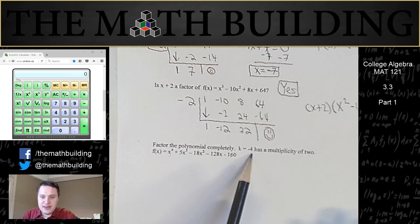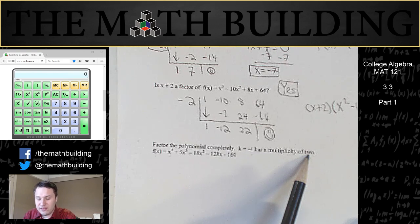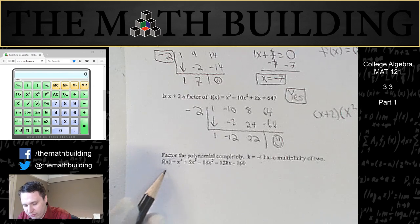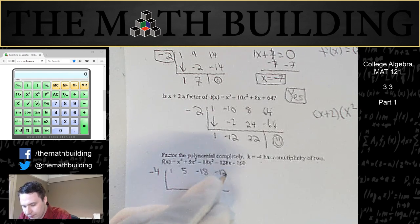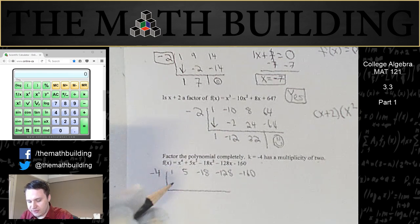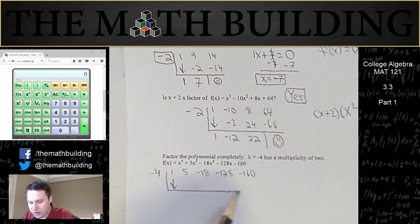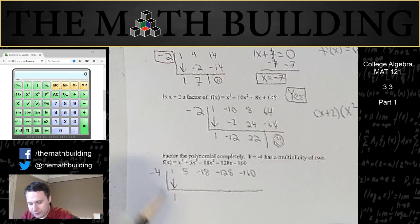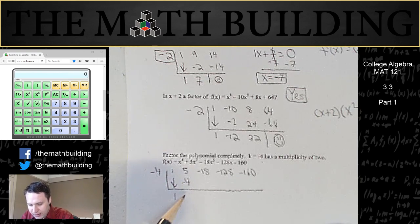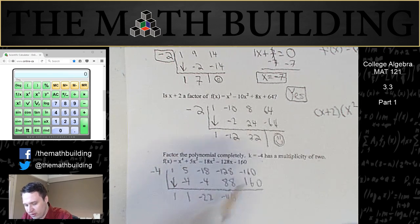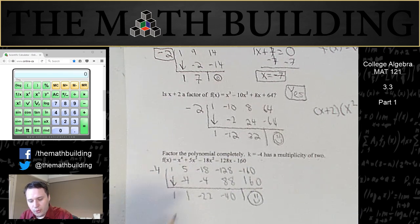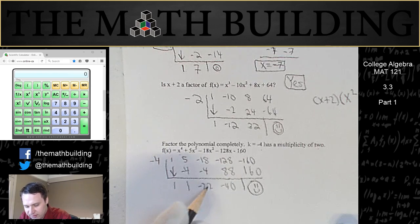Luckily, they tell us that negative 4 is a solution — in fact, they tell us it's a solution twice, with multiplicity 2. So let's do synthetic division with negative 4. Here are our coefficients. Since they told us this is a solution, we know we've done it right if we get a 0. Negative 4 times 1 is negative 4; add to get negative 4. Then add to get negative 22. Negative 4 times negative 22 is 88; add to get negative 40. Negative 4 times negative 40 is 160. We get a 0, so we've reduced the polynomial to x³ + x² − 22x − 40.